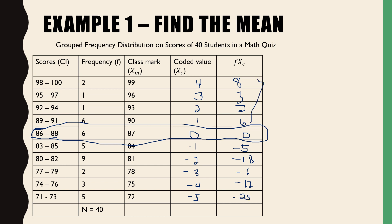Now add all the positive values: 8 plus 3 is 11, plus 2 is 13, plus 6 is 19. So the positive total is 19. For the negatives: 25 plus 12 is 37, plus 6 is 43 — wait, let me recheck. The total of all f×xc values combined is negative 66. Then subtracting: negative 66 plus positive 19 gives us negative 47. So Σfxc = negative 47.